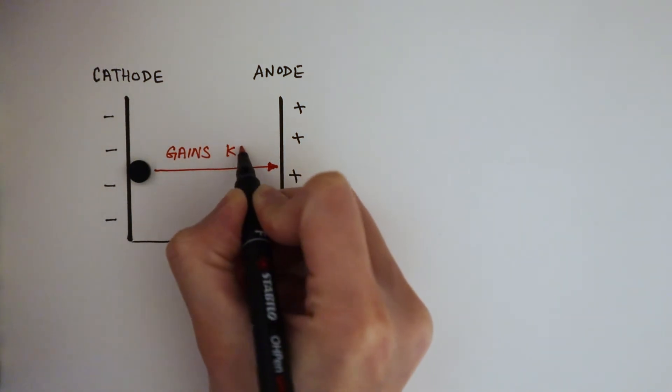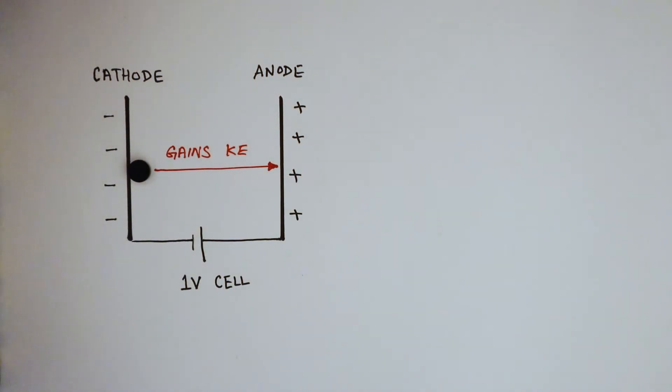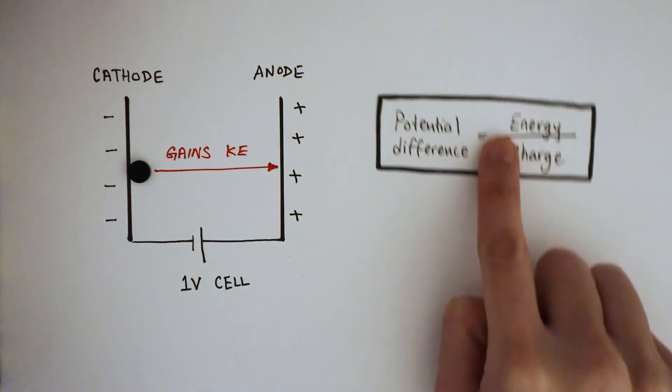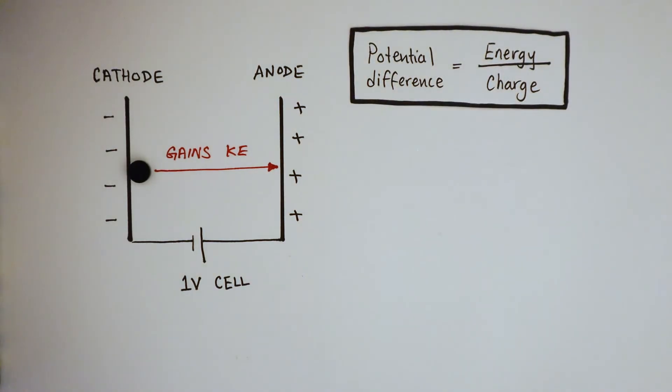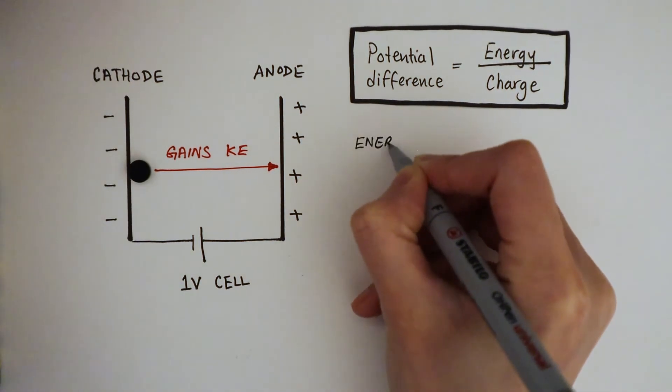We can work out exactly how much energy this electron gains using the definition of potential difference. Recall the equation: potential difference is energy per unit charge. Rearrange this to get energy as the subject.